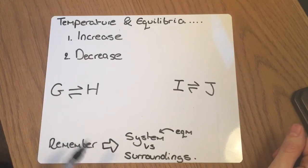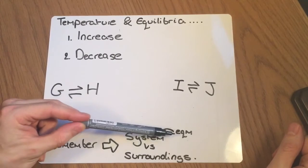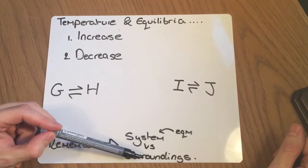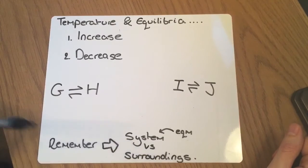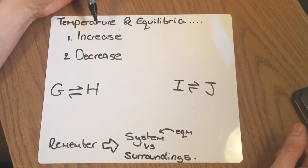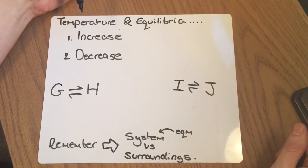And I wanted to remember that we are comparing the equilibrium, which is the system, versus its surroundings. And so the surroundings are the thing we change the temperature of and the system is going to respond to those changes in the surroundings. So we can either increase the temperature of that or we can decrease it.